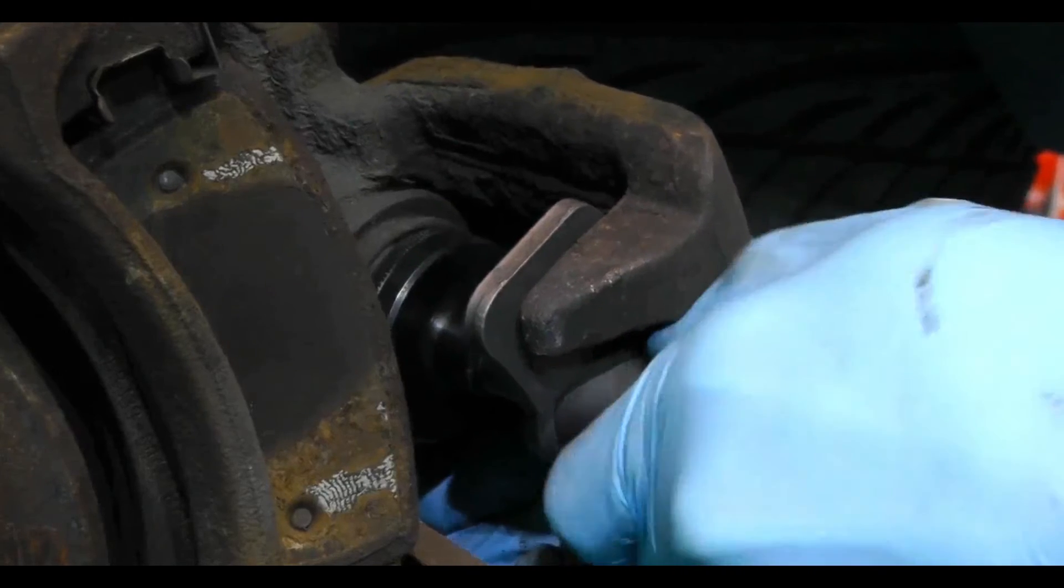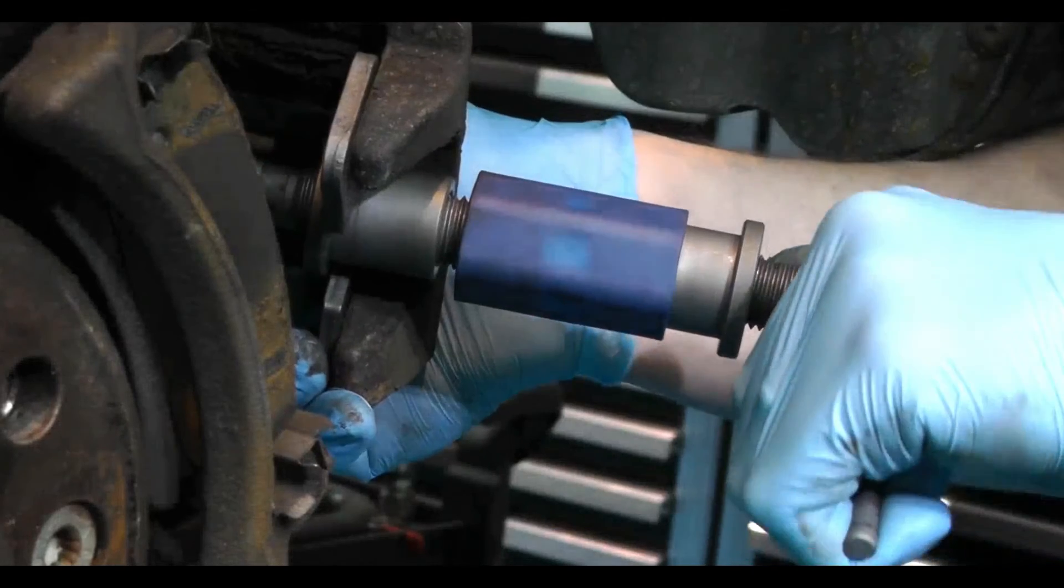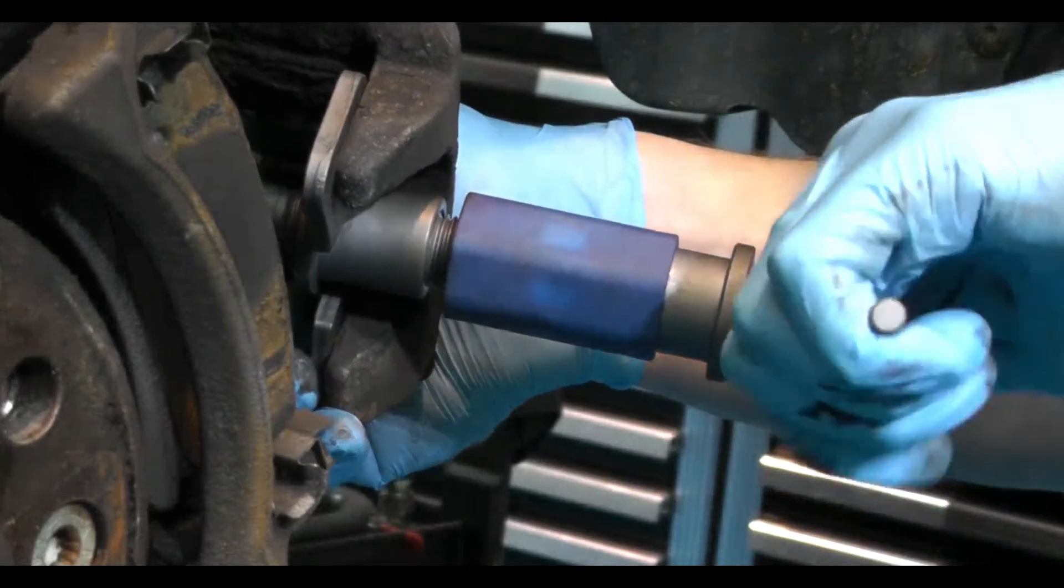When using the rewind tool, apply firm pressure to the piston as you turn the T-handle to make sure the inner piston is wound back.